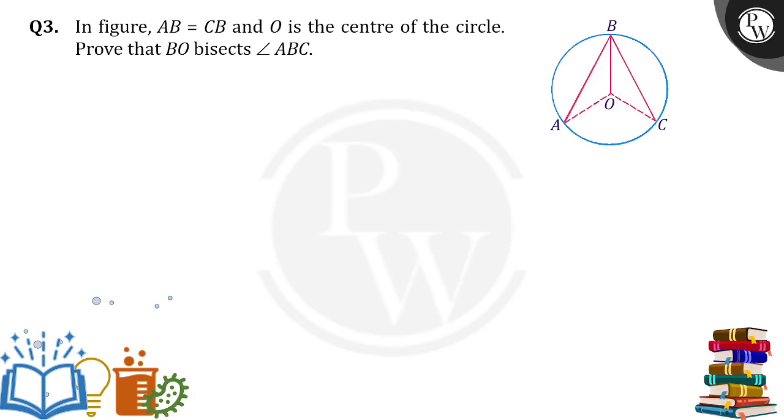Hello everyone, in the given figure AB is equal to CB and O is the center of the circle. Prove that BO bisects angle ABC.